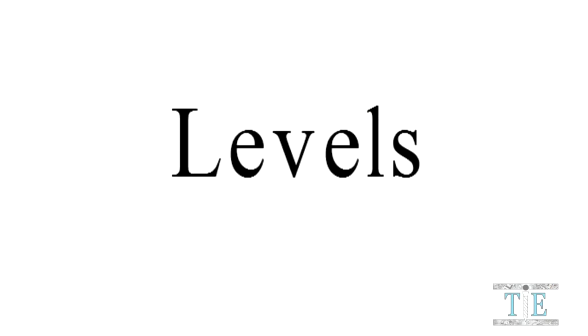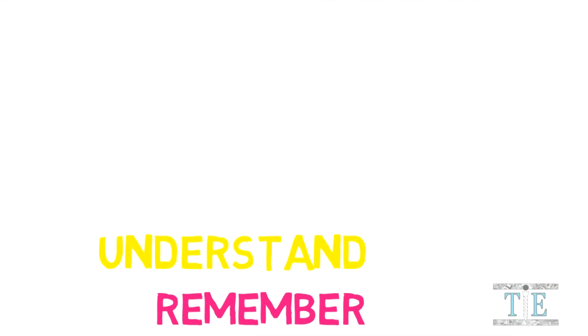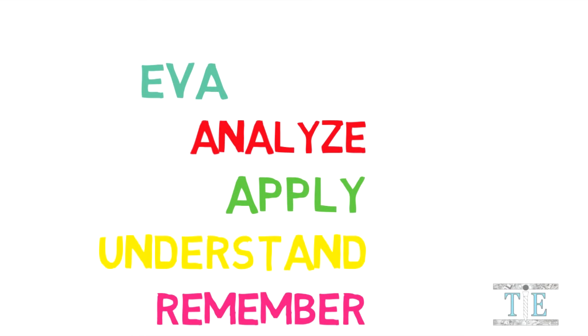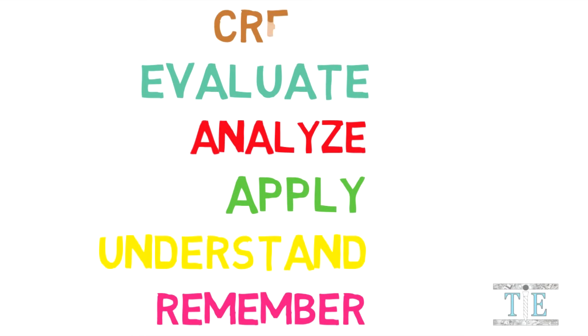What are the levels of Bloom's Taxonomy? The lowest level of cognitive rigor requires students to remember, followed by understand, apply, analyze, evaluate, and lastly create — the highest level of cognitive rigor.